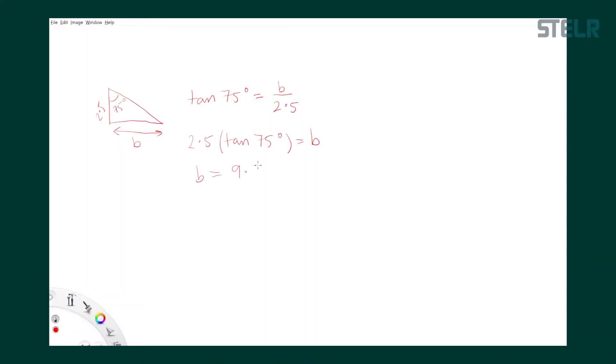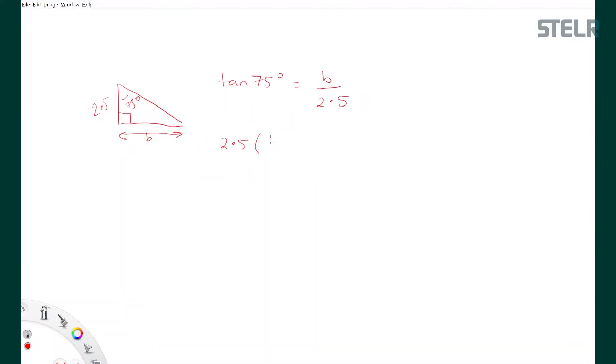So the first feature I'm going to make is these angled edges at the top of the blade and I'm going to make a triangular cutout. It needs to be a right triangle with a height of 2.5 millimeters and a 75 degree angle. I can use trigonometry to find the length of the base using tan.